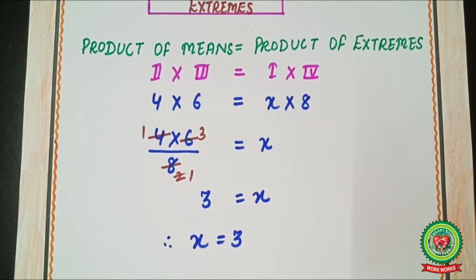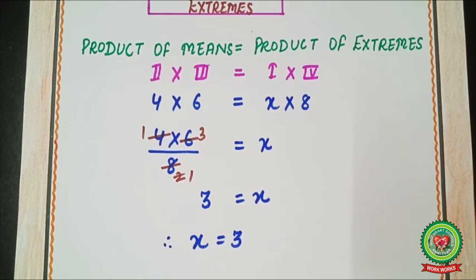Today we discussed the N method and proportion, covering two types of problems: checking if proportion is possible and finding the value of x. Please go through the YouTube links sent with your homework, as they will help you understand these questions better. Thank you.